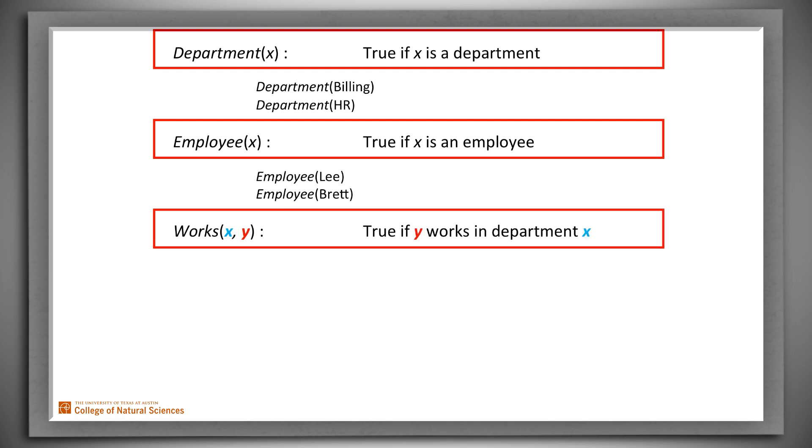But what if we'd written something slightly different? Now Works XY is true just in case Y, the second argument, works in X, the first argument. We've swapped X and Y in the second part of our definition. We've still got a legal definition, but if we use it, we must enter our fact in a way that's consistent with it. Suppose that we write our claims as we did when we had our first definition. So we write Works Lee Billing and Works Brett HR. That's nonsense. Billing doesn't work in Lee and HR doesn't work in Brett. Now we need to write Works Billing Lee and Works HR Brett. Because we swapped the arguments in the definition, we must swap them whenever we use the definition.